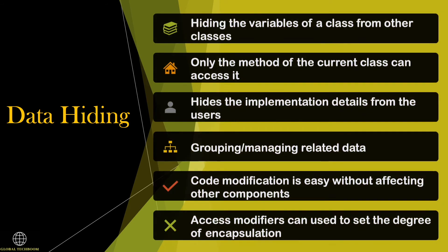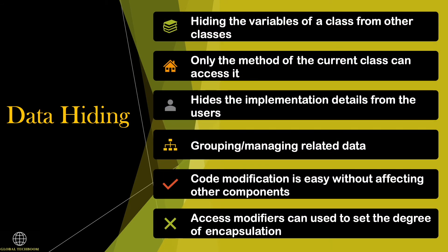Encapsulation allows hiding of inner classes in Java and gives access only to the desired block to the users. It does not allow users to know how the data and variables are stored. The method inside the current class can only access it. This gives the developer the flexibility to not allow users to know how the data and variables are stored, and code modification is easy without affecting other components. Access modifiers can be used to set the degree of encapsulation.